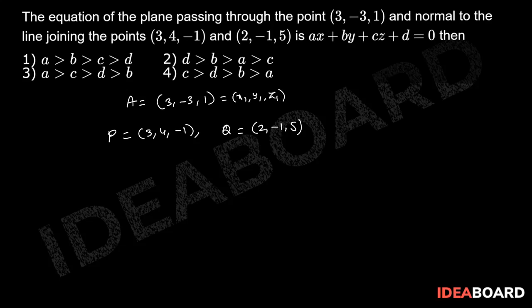PQ is normal of the plane. So the direction ratios of PQ is x₂ - x₁, y₂ - y₁, z₂ - z₁ that is equal to -1, -5, and 6. This is A, B, C.